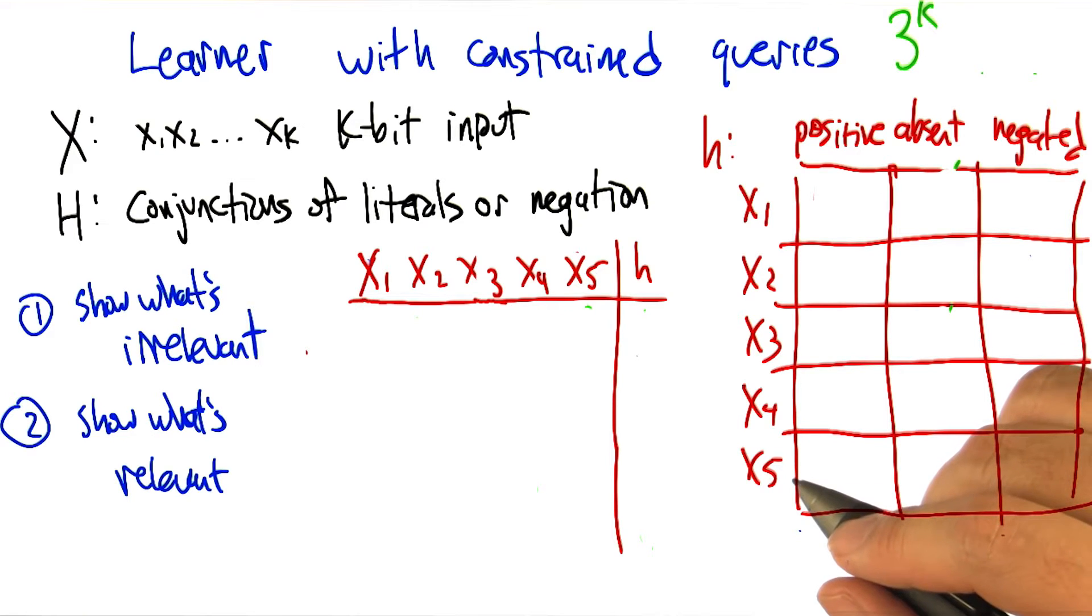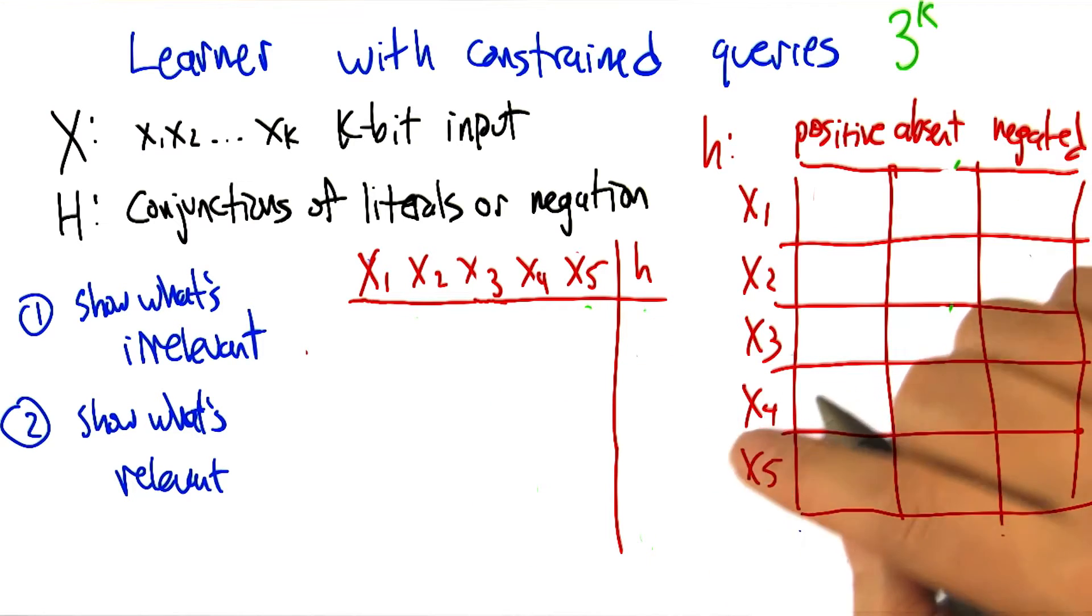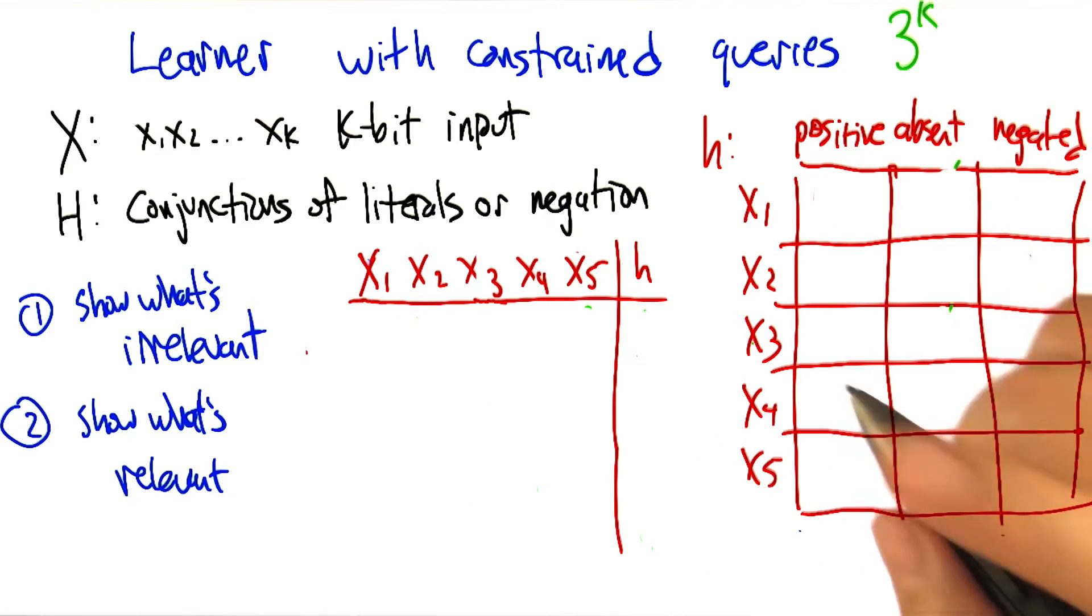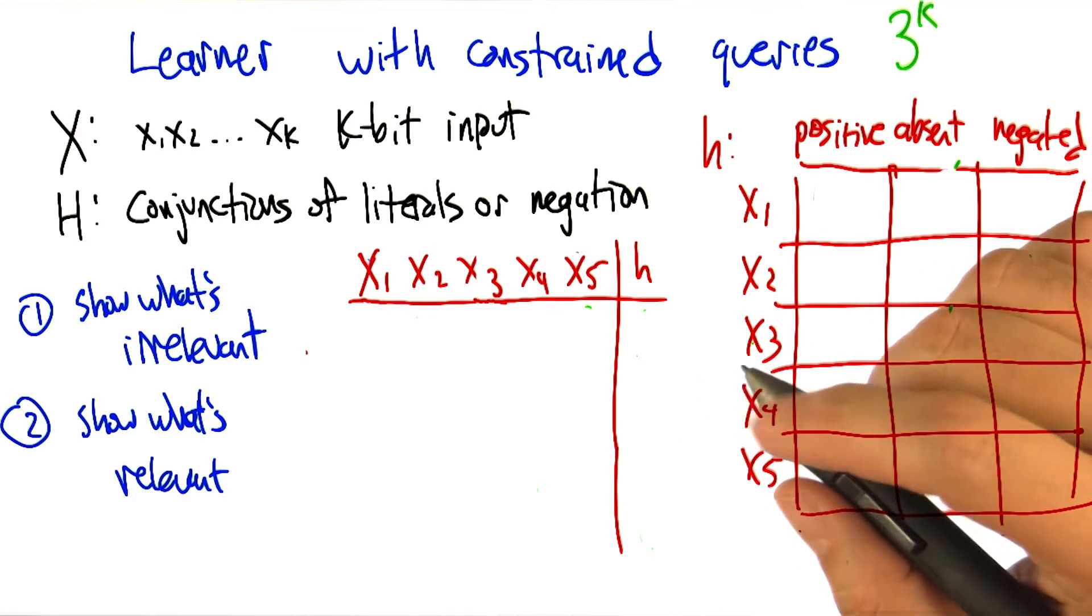So, how would we do that? The trick we did before is we tried to find a specific question we could ask such that we would eliminate half the hypotheses. Indeed. But it's not clear how you could even ask such a question. Yeah, so just to do this as a thought exercise, I have a hypothesis in mind.